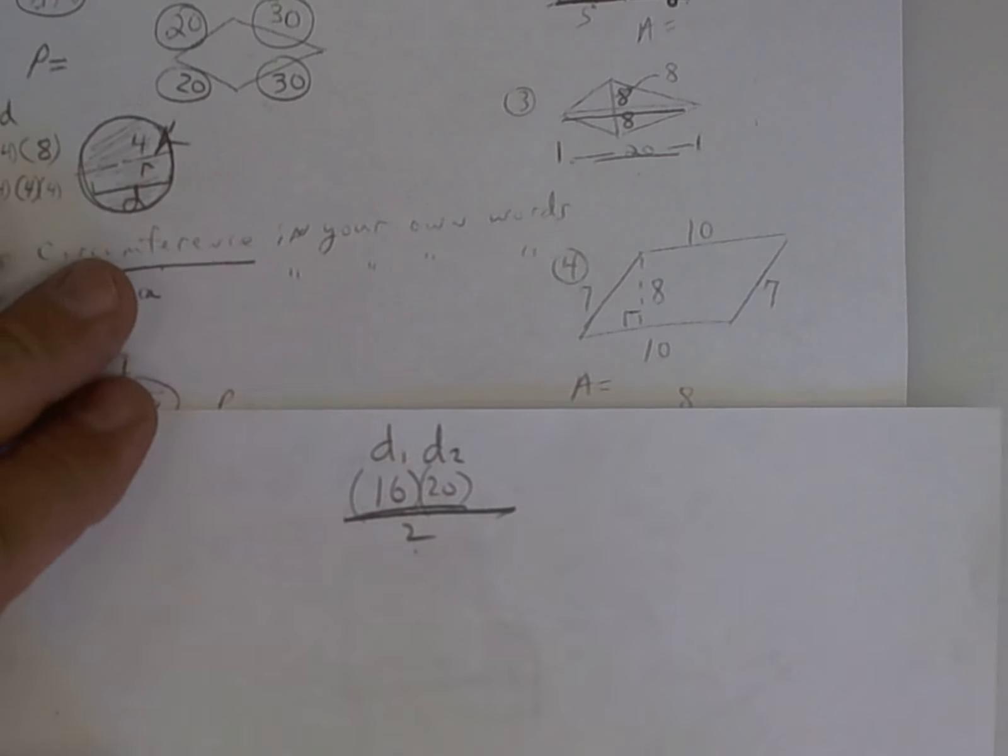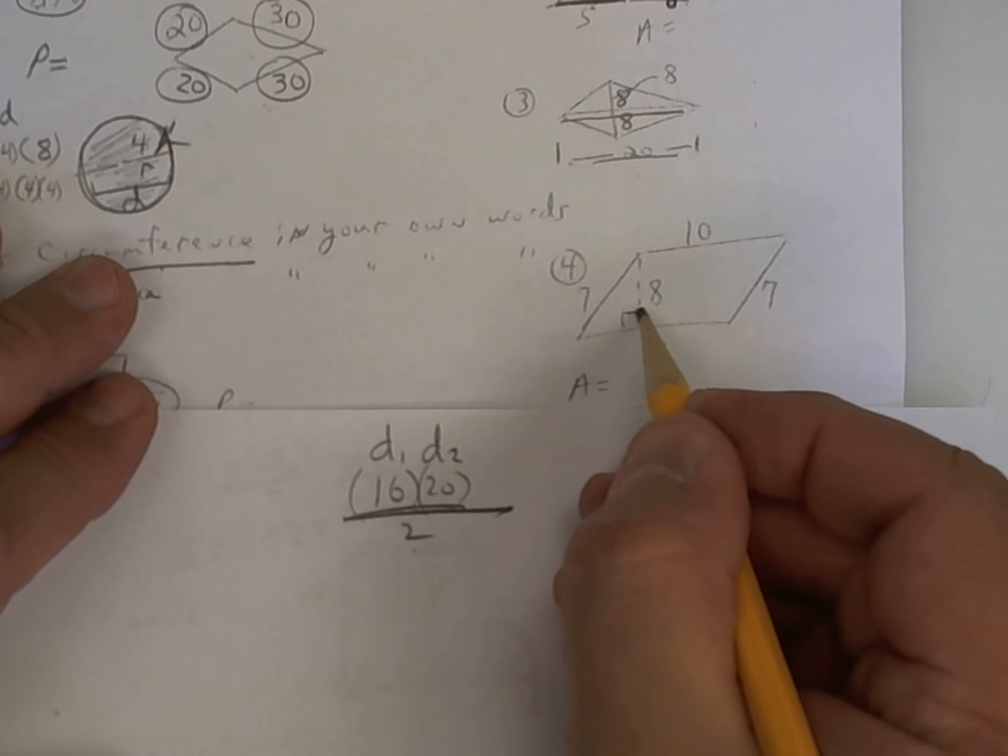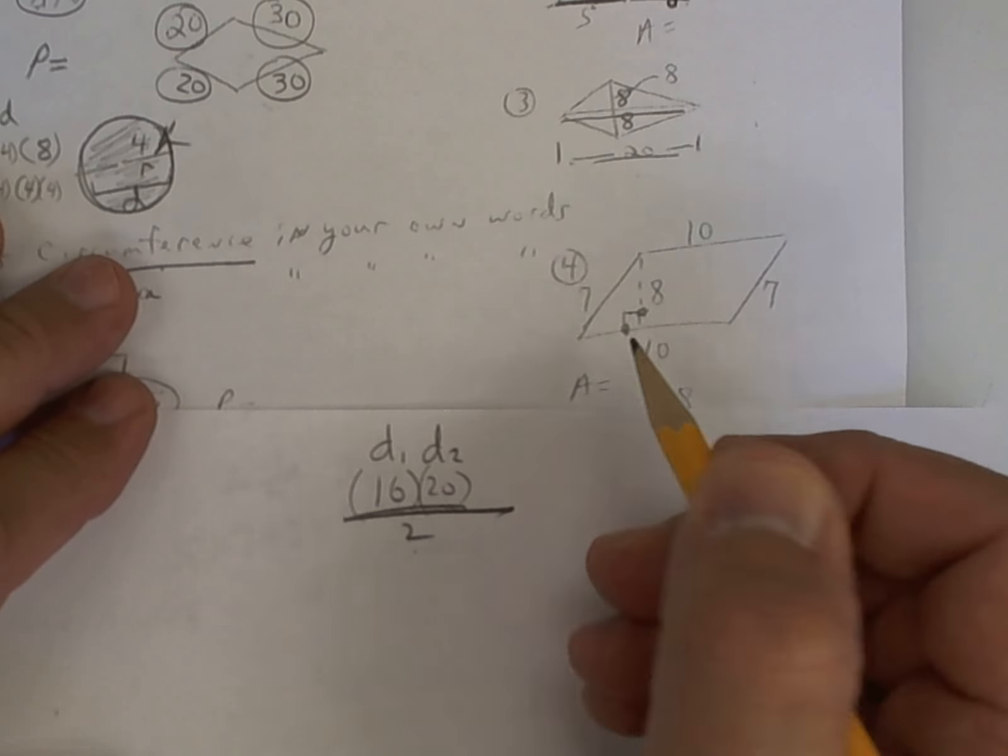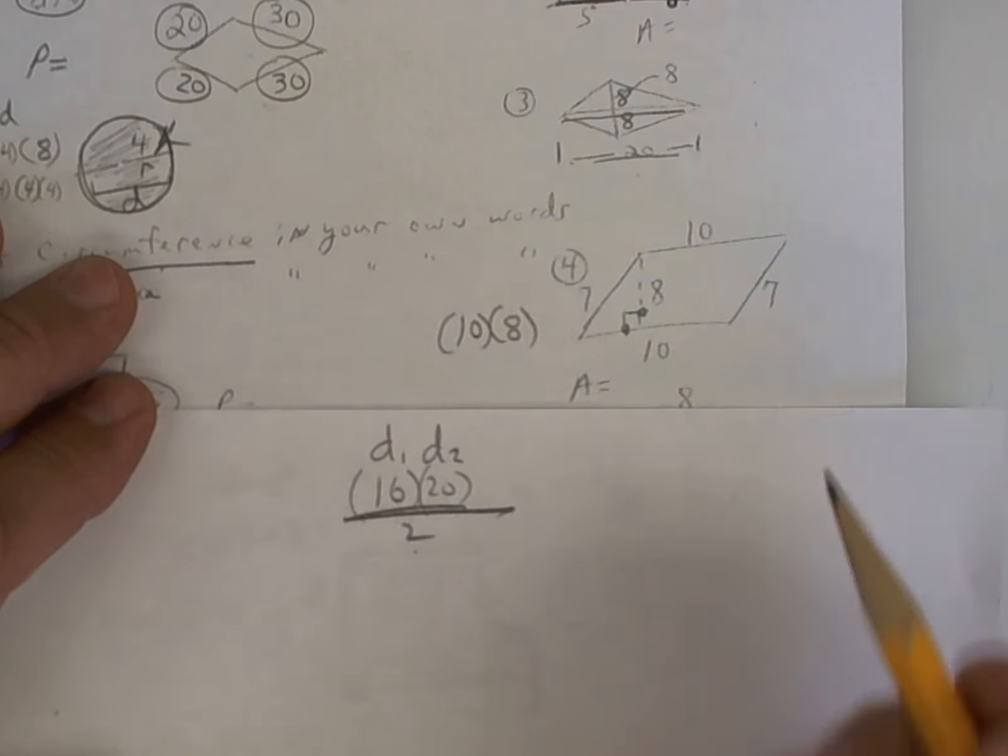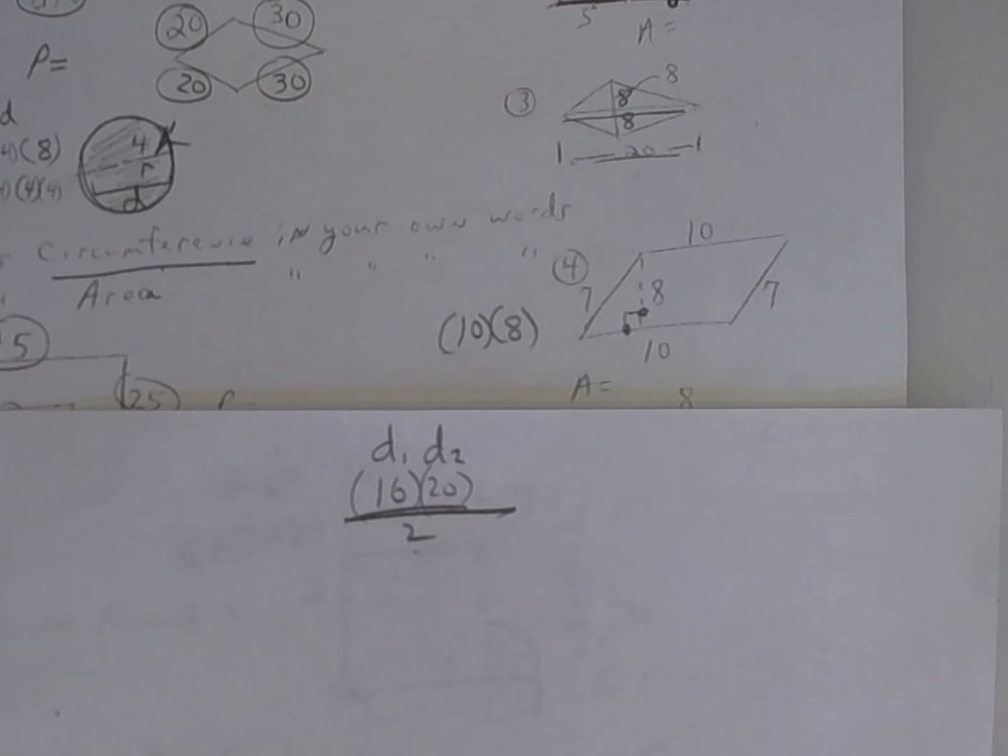This, however, is a parallelogram. All it is is base times height. Look at the box. Ten times eight. Base times height. I'm going to say it again. Do not take half of that. Half is for the trapezoids, triangles, kites, rhombuses, but not a parallelogram. This is like a rectangle, base times height. It's a parallelogram.